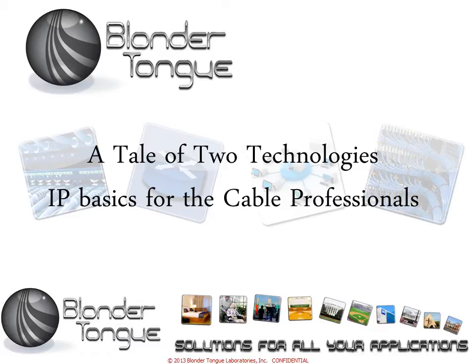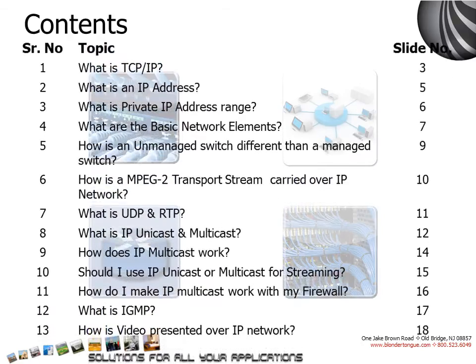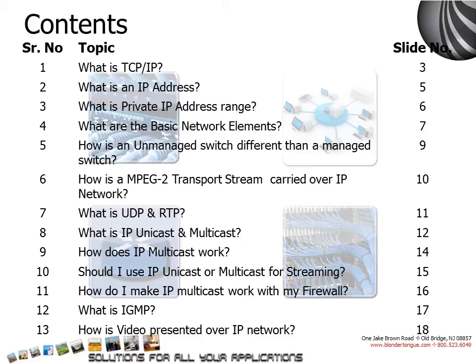To bridge this gap, Blondetongue has created this primer to help RF professionals and others not familiar with IP understand the basics of IP. Whenever you work with an IP network, there definitely are some questions that come across your mind. Through this primer, we will discuss some of the most basic things in the IP world: What is TCP/IP? What is an IP address? How is an MPEG-2 stream carried over an IP network? What is Multicast? Unicast? And what is IGMP? This is not meant to be a full accounting of the IP world — it is much more complex than a few-minute primer could cover — but it will give you a head start on the road to understanding IP.